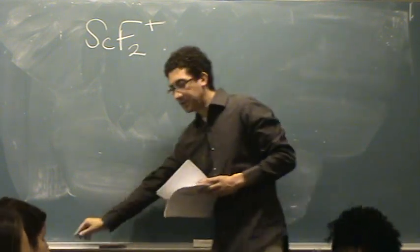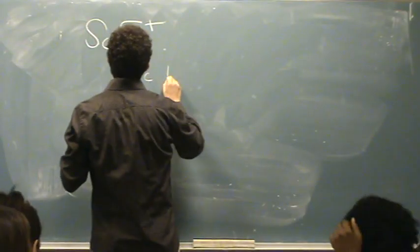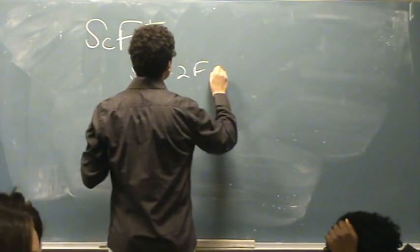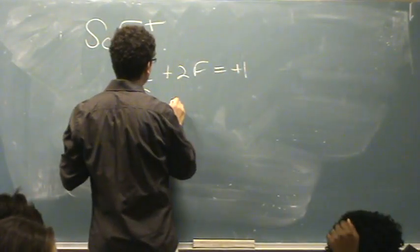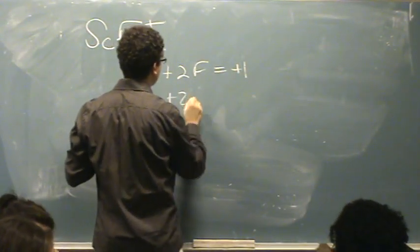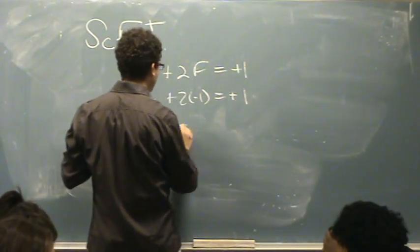Let's figure out the charge on scandium. Scandium plus 2 fluorines equals plus 1. Scandium plus 2 minus 1 equals plus 1. Scandium equals plus 3.